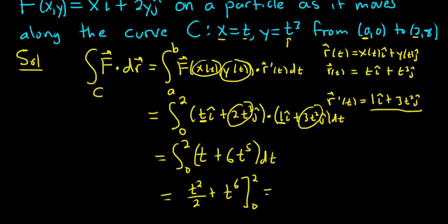You plug in the 2 first. So you get 2 squared over 2 plus 2 to the sixth. Then you plug in 0. And then you just get 0 for both pieces. This ends up being 4 over 2 plus 2 to the sixth. 2 to the sixth is 64. So you end up with 2 plus 64. And so the final answer is 66. That's it.